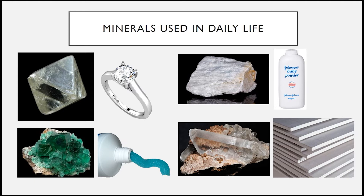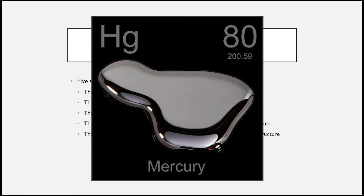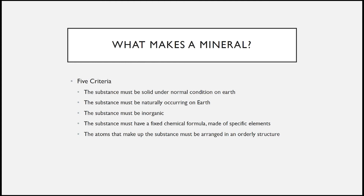So what makes a mineral a mineral? In order for a substance to be a mineral, it must meet five criteria. The first one is that the substance must be solid under normal conditions on earth. If the element is in liquid or gas form, we cannot consider it as a mineral. A good example of this is mercury — mercury is in a liquid form, so we cannot consider it as a mineral.